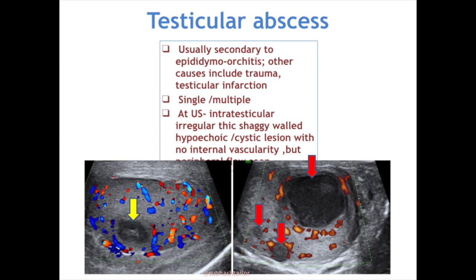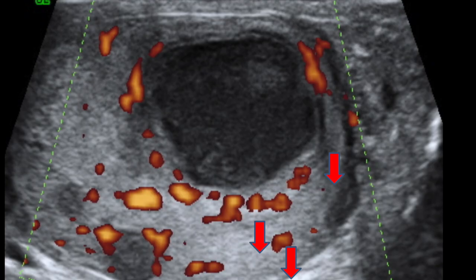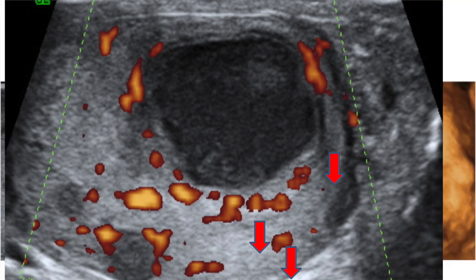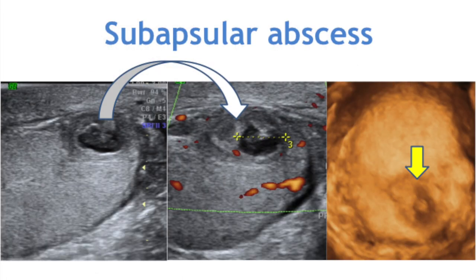Testicular abscess is usually secondary to epididymo-orchitis; other causes include trauma and testicular infarction. It can be single or multiple. At ultrasound, a well-defined hypoechoic to echo-free or complex cystic mass is seen with a slightly thick or shaggy wall, internal echoes, no internal vascularity, but slightly increased peripheral vascularity. In the typical clinical setting, testicular abscess can be diagnosed. A small subcapsular testicular abscess and its 3D reconstruction are shown.